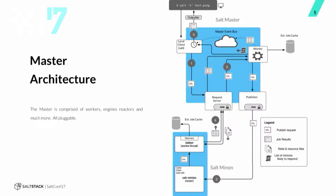That's a quick overview of the master's architecture. I now want to point out a number of different plugin systems that exist along that path. When the Salt minion started up, it generated its grains — that's a plugin system. When the Salt minion started up, it loaded up all of the execution modules — that's a plugin system. It loaded up all of the state modules so that it could do configuration management — that's another plugin system. When the master started up, it started quite a few other plugin systems.